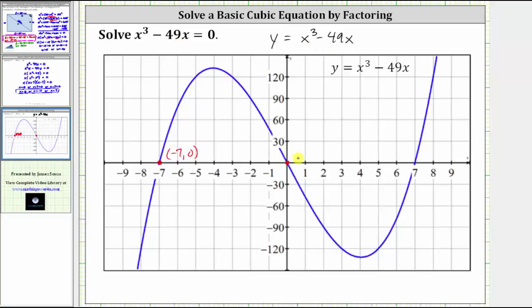This point on the graph is the origin, where we have zero comma zero. When x is zero, the y value is zero, which gives us a solution to the equation. And then finally, this point here is represented by the ordered pair seven comma zero, telling us that when x is seven, y is zero, which again gives us a solution to the equation.